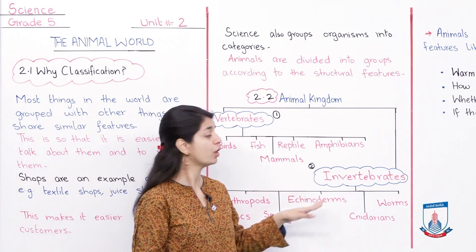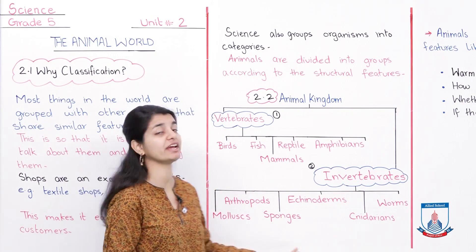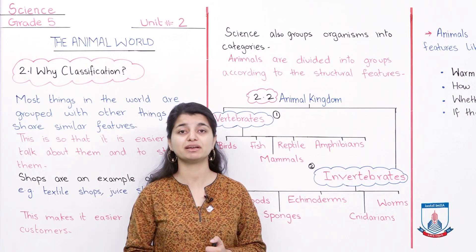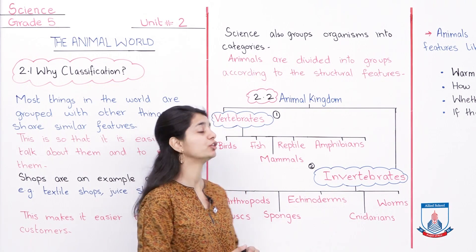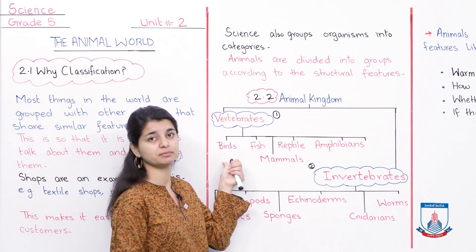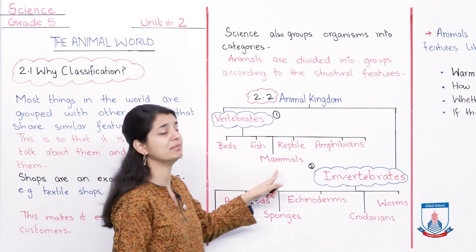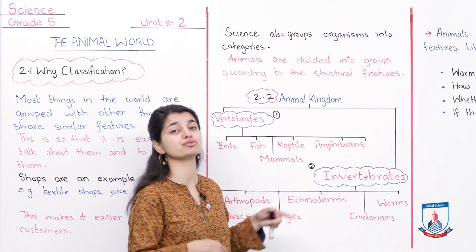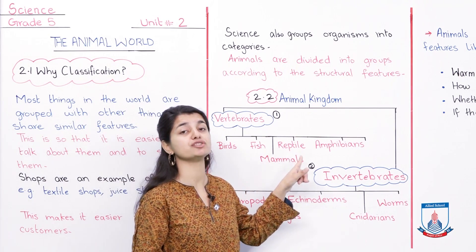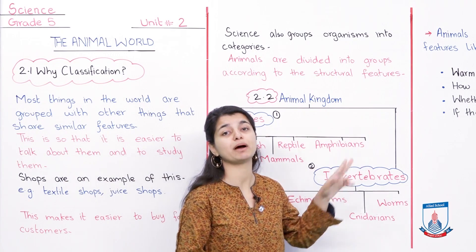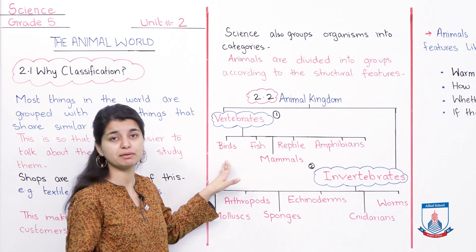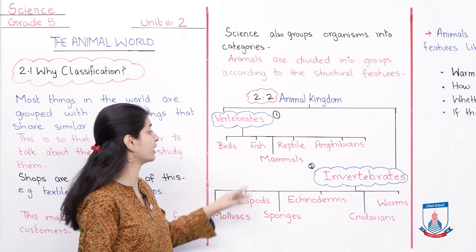The 5 types of vertebrates are: birds, fish, mammals (which give birth to their young and don't lay eggs), reptiles (which lay eggs), and amphibians (which can live both in water and on land). Examples of birds include hawks and eagles. Fish examples include dolphins and sharks. Mammals include humans and dogs. Frogs give birth to offspring rather than laying eggs.